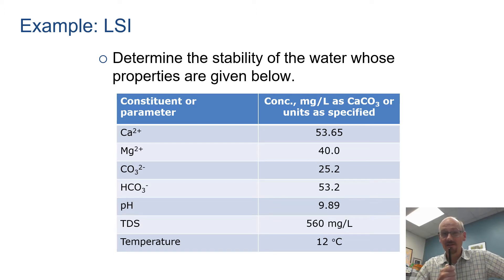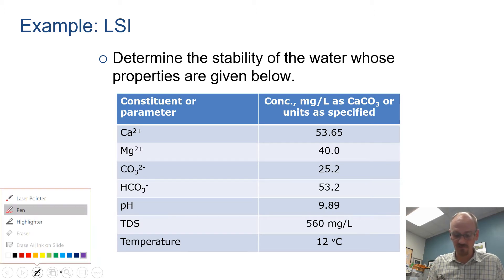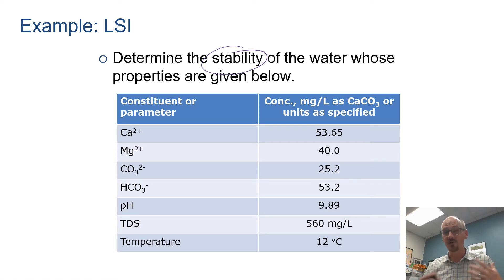Here we want to calculate the Langelier Saturation Index, which helps us figure out the stability of the water - whether it's going to be corrosive or depositional. The properties of the water in terms of calcium, magnesium, carbonate, bicarbonate, etc. are given in this table, and we're going to use most of them to figure out what the LSI is.